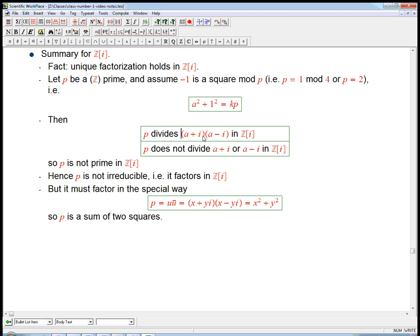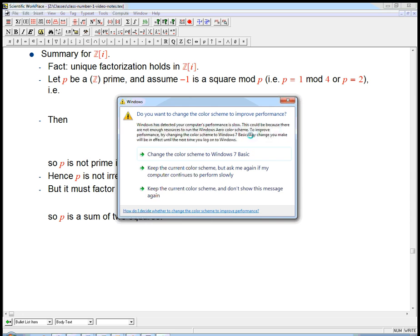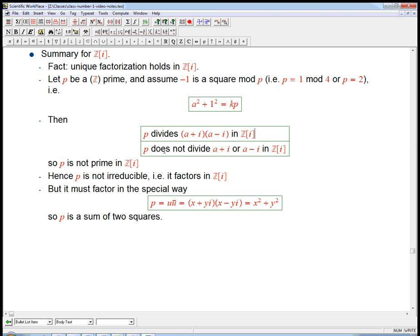Then p divides (a + i)(a - i), because that's a clever way to write this using Gaussian integers. So this is the step where we've really moved to the Gaussian integers. And therefore, since p does not divide either factor, that's something fishy about p.